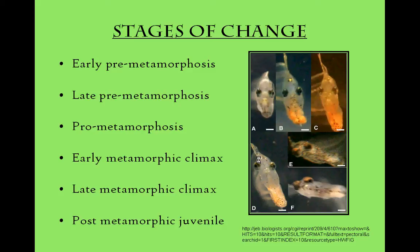This next slide shows depictions of a flatfish at several stages throughout the larval phase. As seen in picture A, the fish is in the early pre-metamorphosis stage, when no eye migration is present. Picture B shows the fish in the late pre-metamorphosis stage, when there is no eye migration, but the fish swims with a very slight tilt of only a few degrees. Picture C, known as pro-metamorphosis, is when the migration of one eye begins to occur, and the angle of tilt increases to around 15 degrees.